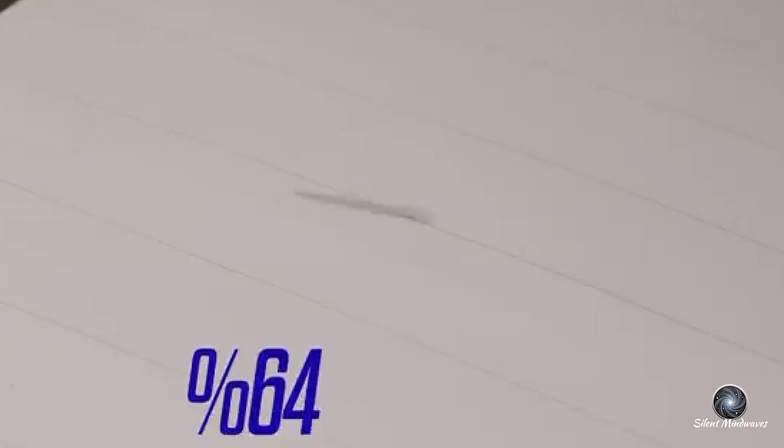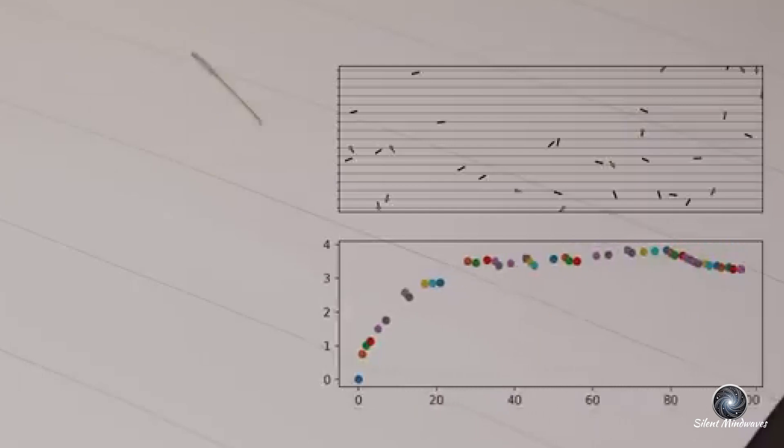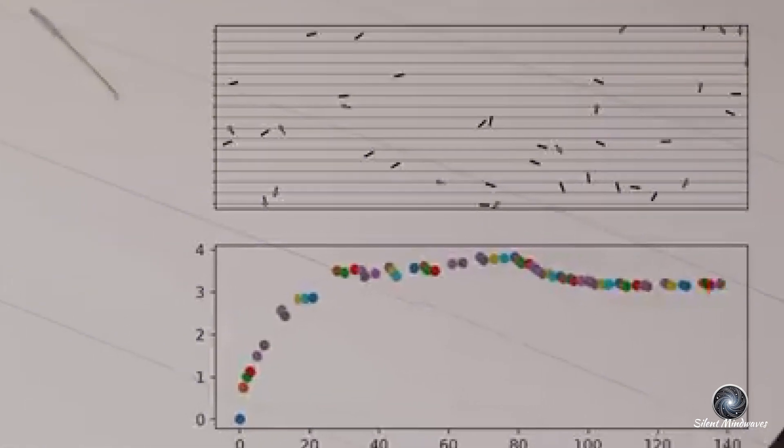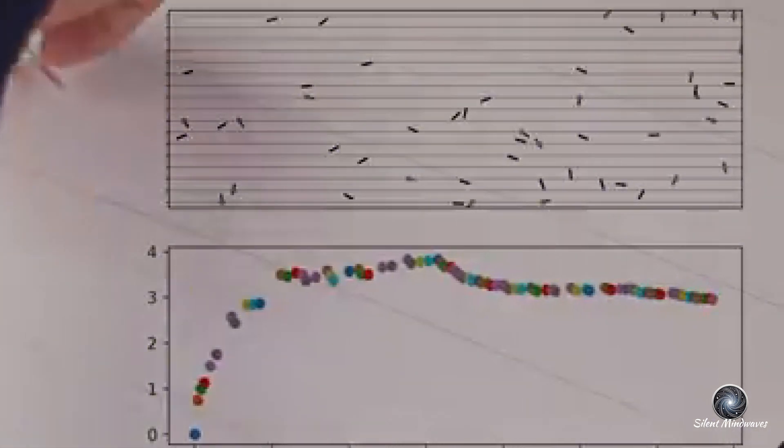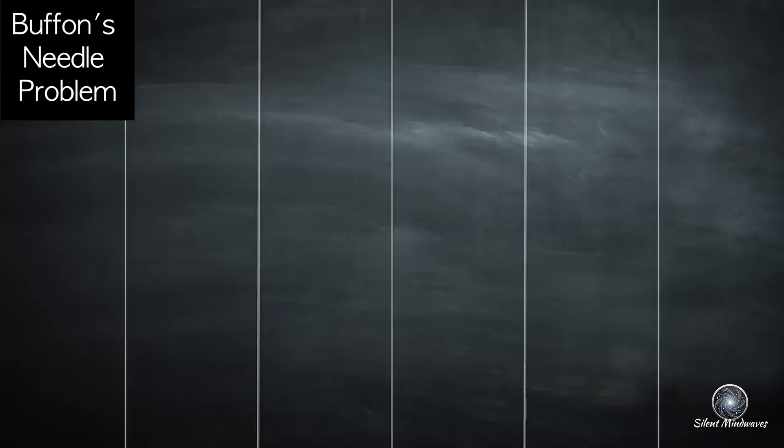Now, if you repeat this process 100 times, how many times do you think the needle will land on a line versus between the lines? You might expect a 50 to 50 split, right? Like flipping a coin? But with the needle, the probability is different. It's about 64 out of 100 times that the needle lands on a line. There's a specific ratio behind this randomness. And when you calculate it, you get two divided by pi. Even though there's no circle in sight, the probability of the needle landing on a line or between the lines brings us to pi. This was first discovered in the 18th century by a mathematician named Buffon. So it's called Buffon's needle problem.